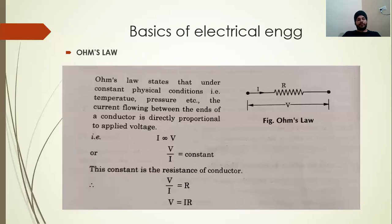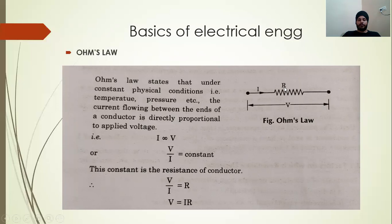Next is Ohm's Law, which we have already studied at school level. Ohm's Law states that the current flowing between the ends of a conductor is directly proportional to the applied voltage. The formula is V = IR, where V is voltage, I is current, and R is resistance.